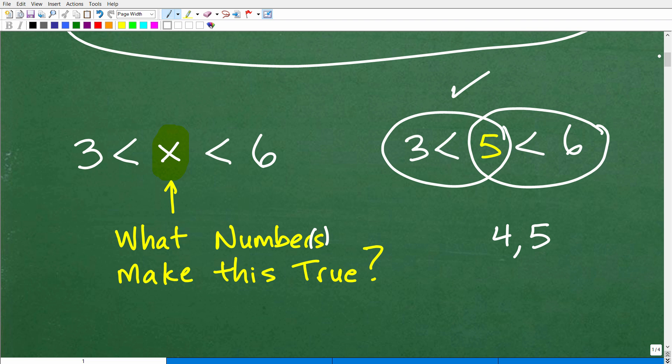well, can't we just write a whole bunch more numbers? Let's say, how about 3.0001? Is that a solution? Well, is 3.001 greater than 3? Yes, that is. That is true.